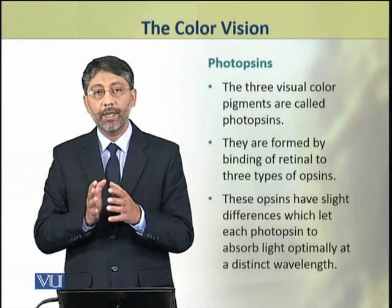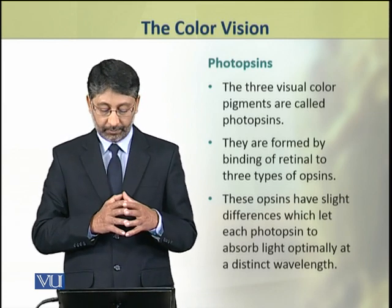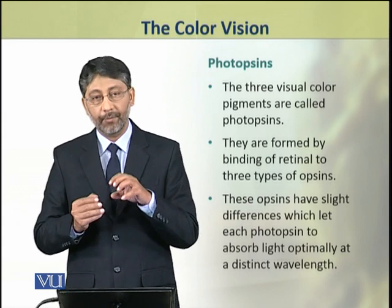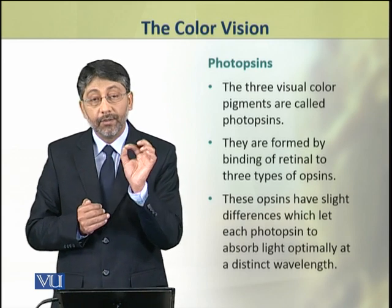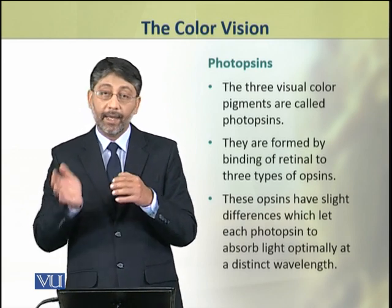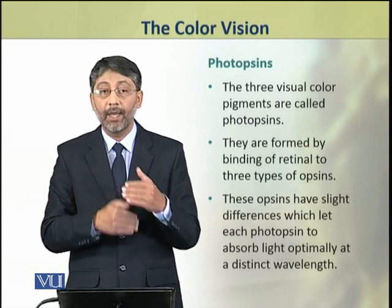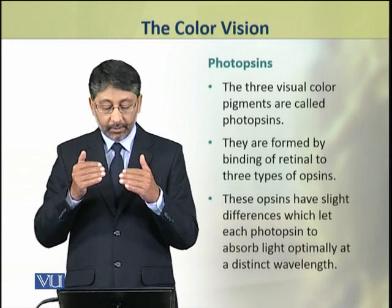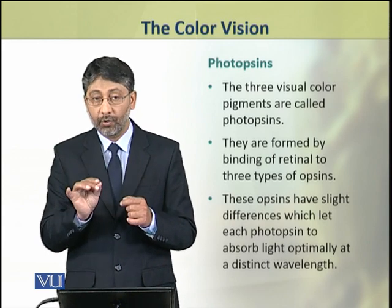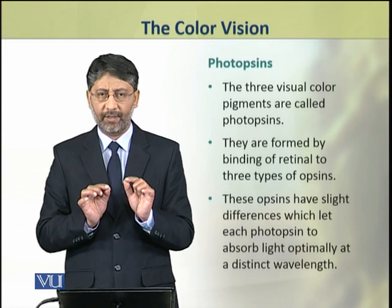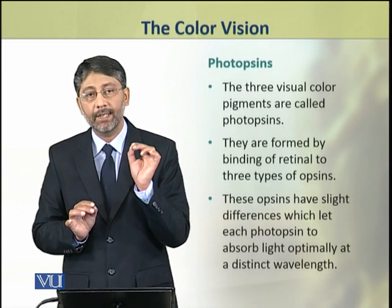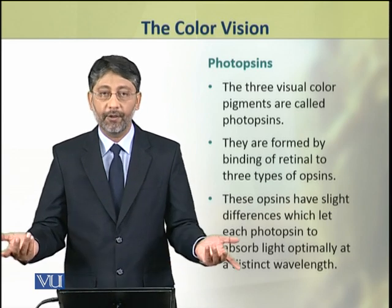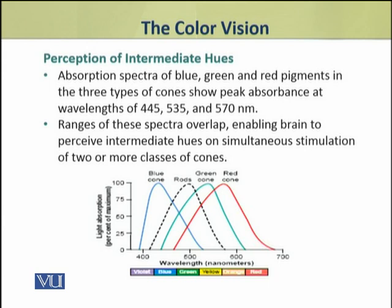Dear students, the three color pigments are called the photopsins. They are formed from retinol — specifically, by the binding of retinol to three different types of opsins. Retinol is the same in each case, but the three different types of opsins result in each photopsin absorbing light optimally at a different wavelength, corresponding to different colors. There are three basic color pigments in these cone cells.